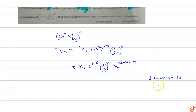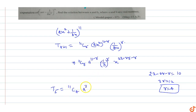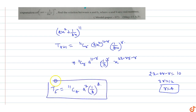यहाँ से 3r = 12, so r = 4. Coefficient of x^10 in this expansion: r = 4 means T5 (fifth term) of this expansion is the coefficient of x^10, which is 11C4 · a^(11-4) · (1/b)^4 = 11C4 · a^7 · (1/b^4). This is equation first.